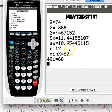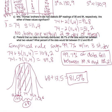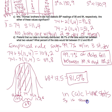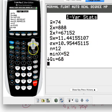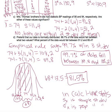In this case, since we said this was a sample of 12 people, we use SX and not σx. One-variable stats gives you SX for sample and σx for population. When you go to find the variance, make sure you write down the full unrounded value — 11.44155107 — and square that instead of the rounded version. If you do that, your answers should all match up and be rounded appropriately.